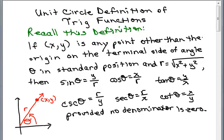Now, there are different ways to define the trig functions and one of the first ways I defined it in my videos was using this definition. If (x,y) is any point other than the origin on the terminal side of an angle θ in standard position and r equals the square root of x squared plus y squared,